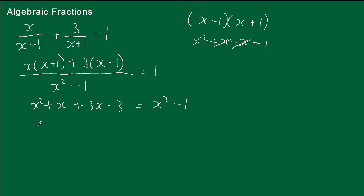Let's simplify. We've got x squared plus 4x minus 3 equals x squared minus 1. I can see x squared on both sides, so I can take x squared off from both sides — they just disappear.